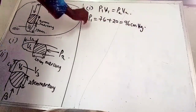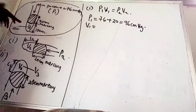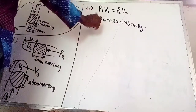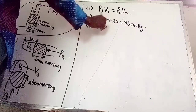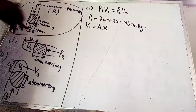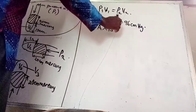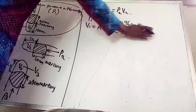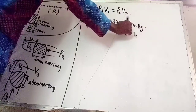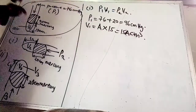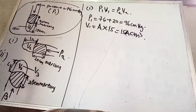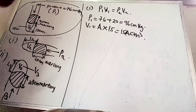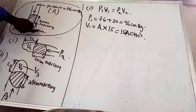So P1 equals 76 cm of mercury (atmospheric pressure) plus 20 cm (the mercury column), giving 96 cm of mercury. V1 is area times the length of the air column, which is A times 15, giving 15A cubic centimeters. Volume equals area times length — and the length of the air column here is 15 cm.